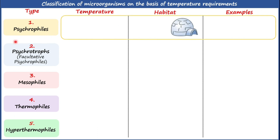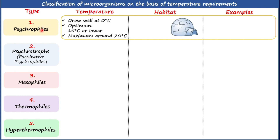Psychrophiles are also commonly known as cryophiles, as these are cold-loving microorganisms. Psychrophiles can grow well at 0°C, but the optimum temperature supporting the growth of psychrophiles is 15°C or lower.